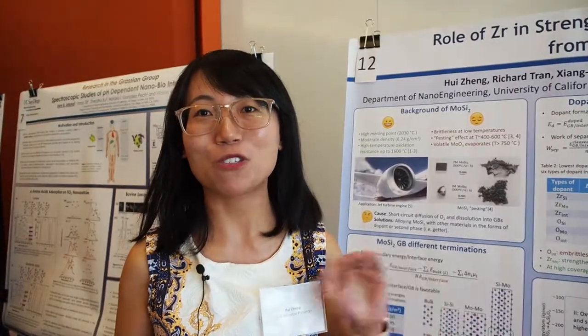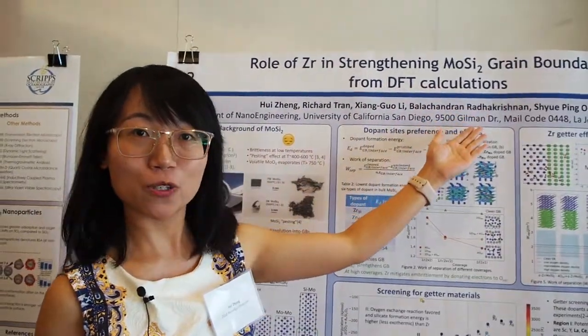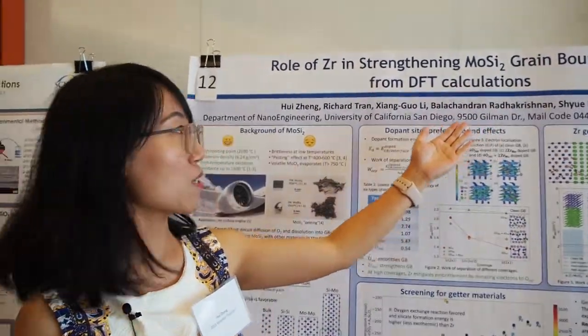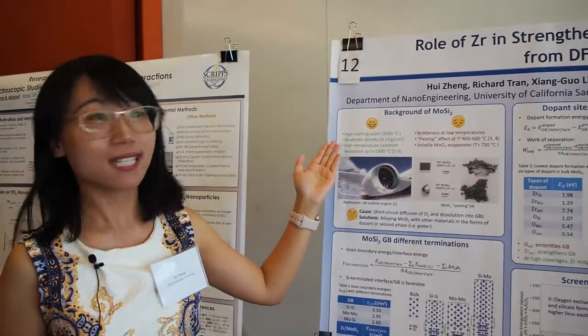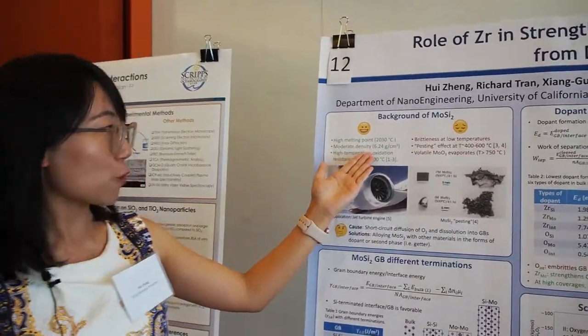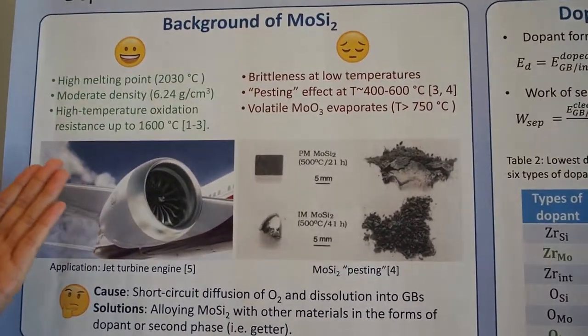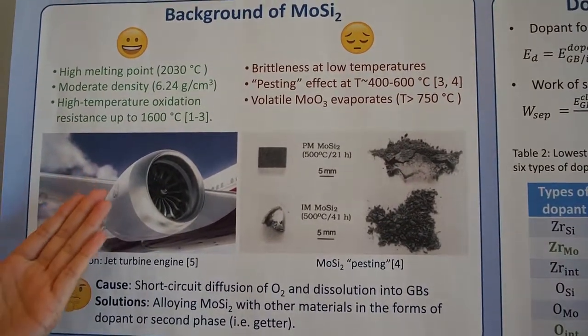My goal is to make these blade materials stronger so that we can decrease the probability of cracking happening, to give people a safer environment to fly. We chose MoSi₂ as our host material because it has a high melting temperature, moderate density, and high-temperature oxidation resistance.